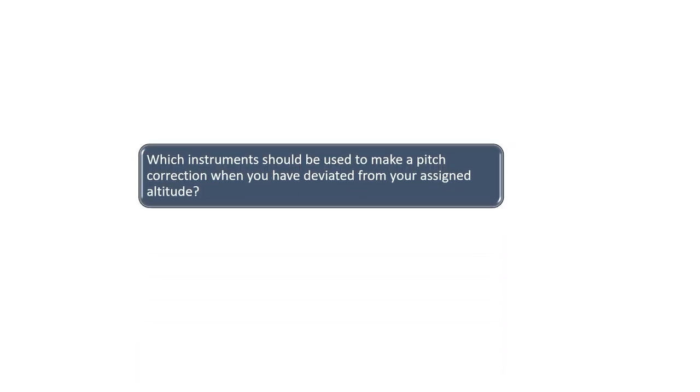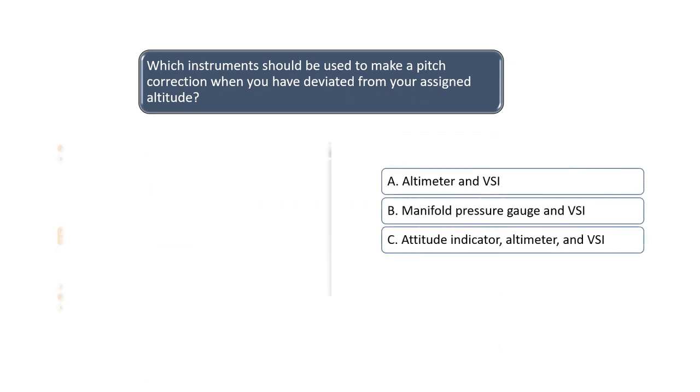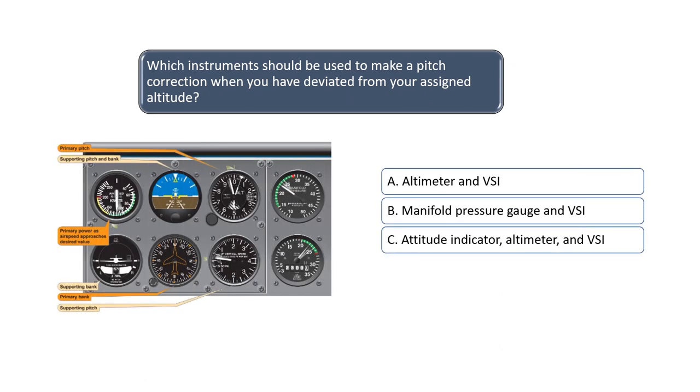Which instruments should be used to make a pitch correction when you have deviated from your assigned altitude? The illustration on the left can be found in Chapter 7 of the Instrument Flying Handbook. As you can see, the primary pitch instruments are the altimeter, vertical speed indicator, and attitude indicator. The correct answer is C.